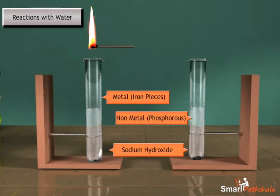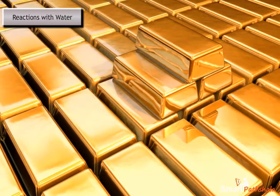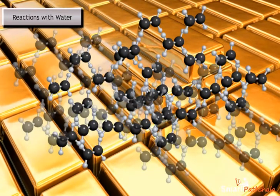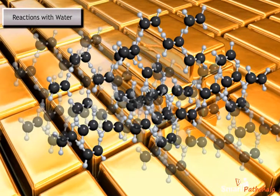Now let us analyze why the pop sound is produced from the first test tube. Generally, metals react with acids and produce hydrogen gas which burns with a pop sound when exposed to fire.